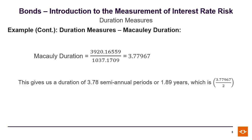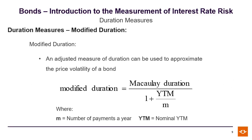Now we move on to modified duration. This is an adjusted measure of the Macaulay duration that we use to approximate the price volatility of the bond. Here, we're adjusting the Macaulay duration by yield to maturity, taking into account the frequency of the coupon payment.